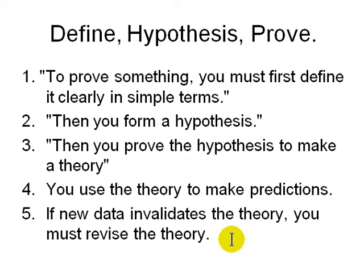A good theory explains things already seen around you and also predicts new things not yet observed. When something doesn't fit, you revise the theory or discard it. For example, the theory that the earth is flat is wrong — when you fly up high enough, you can actually see that the earth is round.